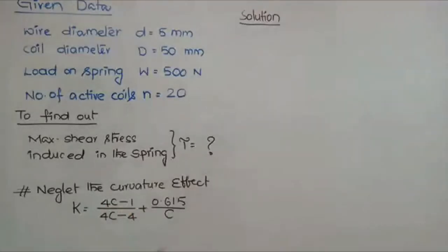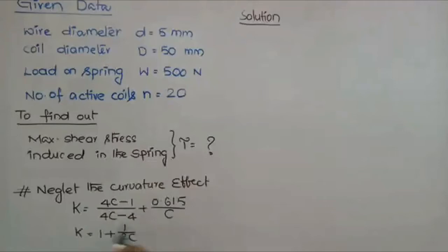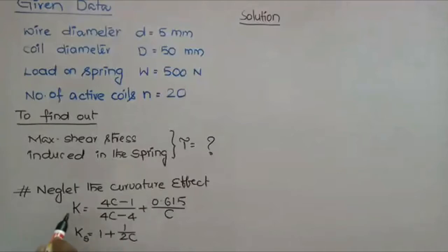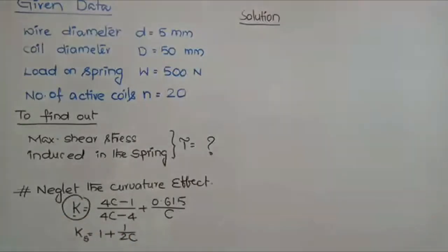If the curvature effect is not taken into consideration, then Ks is equal to 1 plus 1/(2C). That's why this is indicated with K suffix — shear stress factor Ks. If the curvature effect is taken into consideration you use the Wahl factor K; if curvature is neglected, you use Ks.